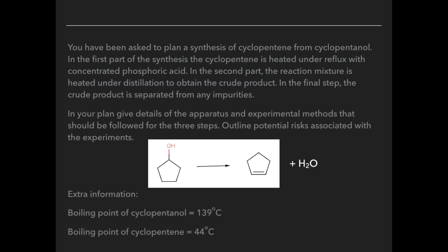I'm going to use this task to tease out all of those skills. Imagine you've been asked to plan a synthesis of cyclopentene from cyclopentanol. In the first part of the synthesis, the cyclopentanol is heated under reflux with concentrated phosphoric acid. Then the reaction mixture is heated under distillation to obtain the crude product, and finally the crude product is separated from any impurities. You need to give details of the apparatus and experimental method for all three steps, and outline the kind of things you would need to include in a risk assessment.